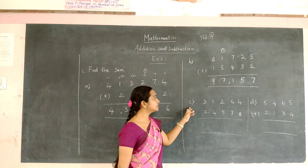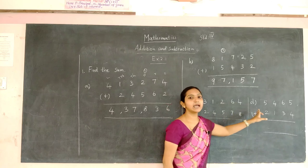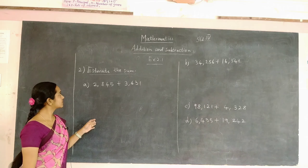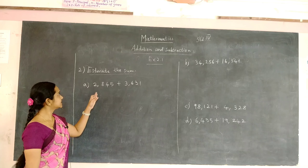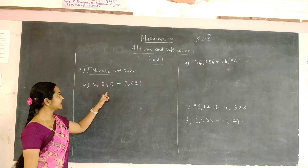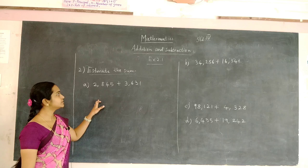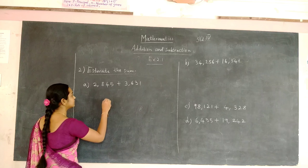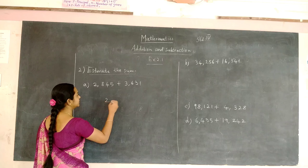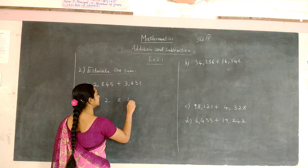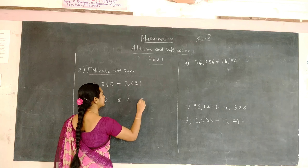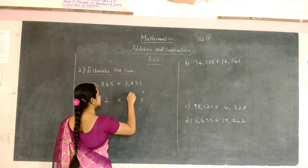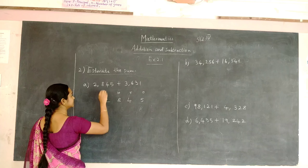Now we are going to do C and D as assignments. The second problem is estimator sum. We are going to add the numbers, so write the number with the place value: 1, 10, 100, and 1000.